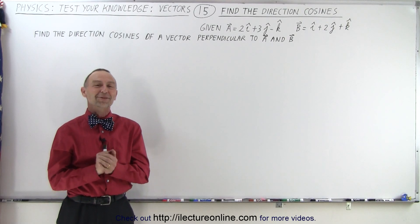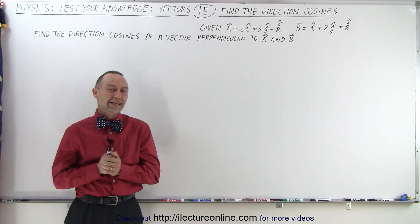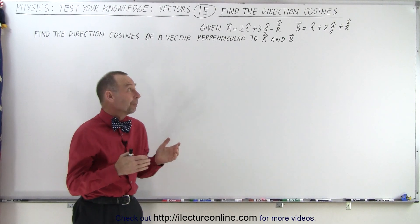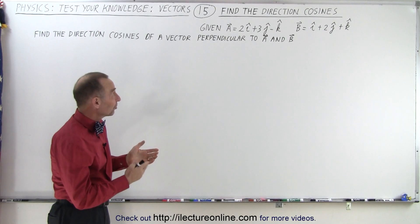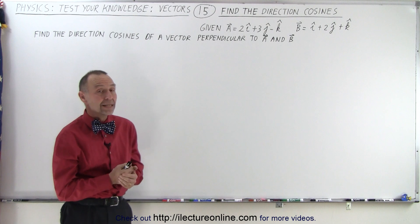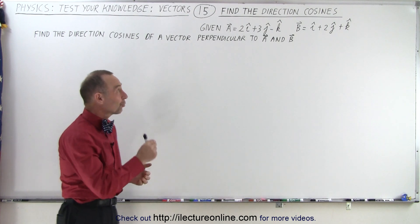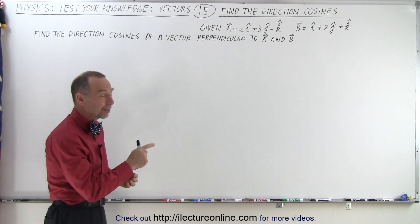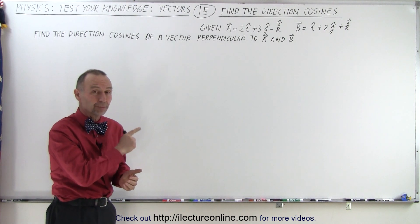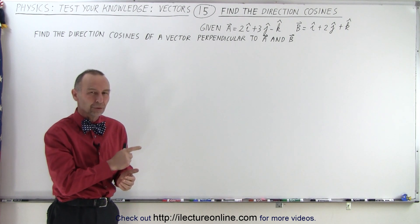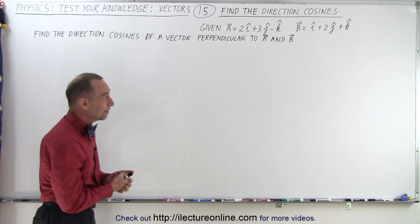Welcome to Electronline. Here we're given a pair of vectors a and b, and we're supposed to find the direction cosines of the vector perpendicular to a and b.